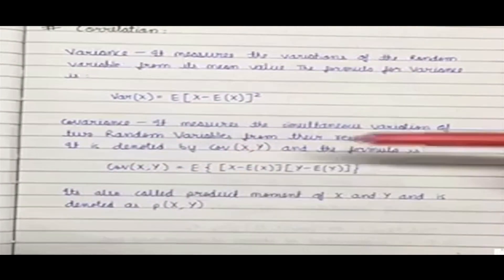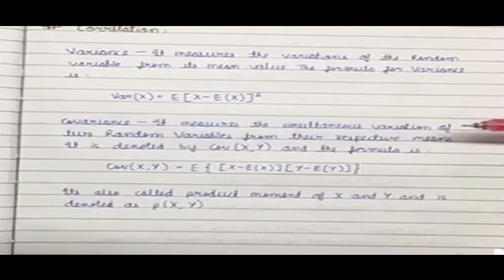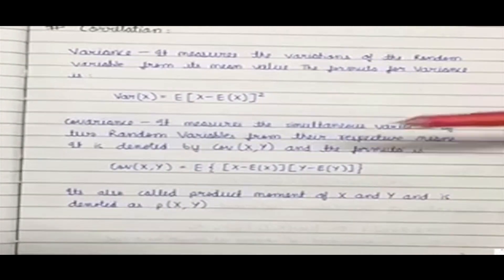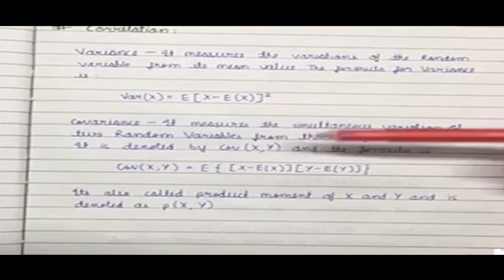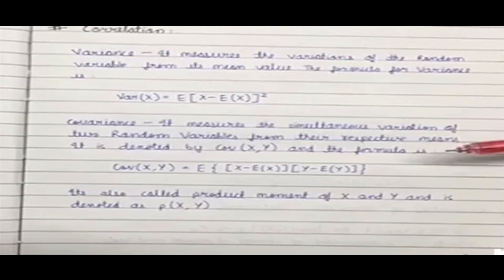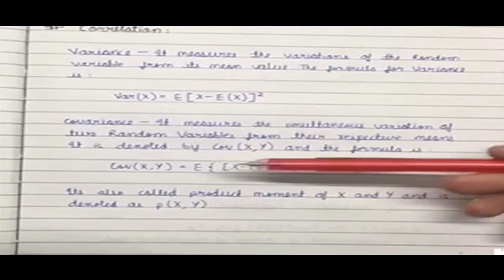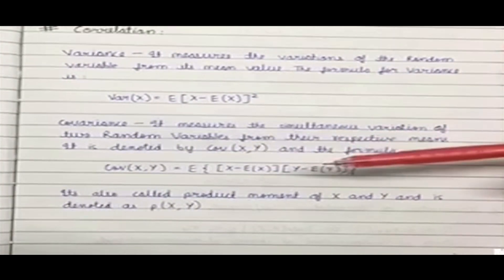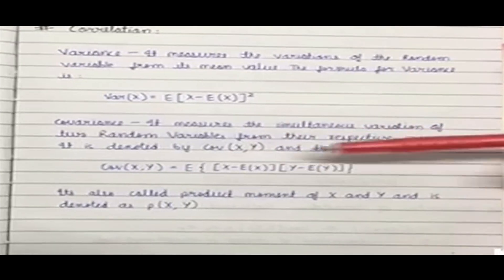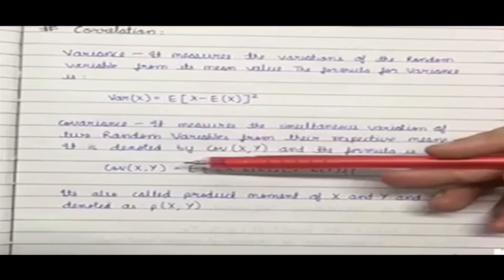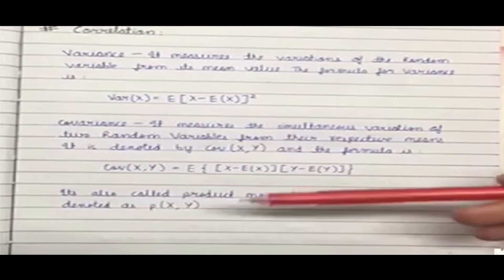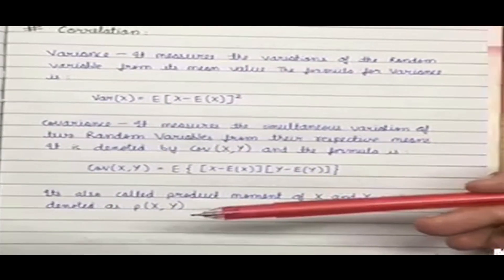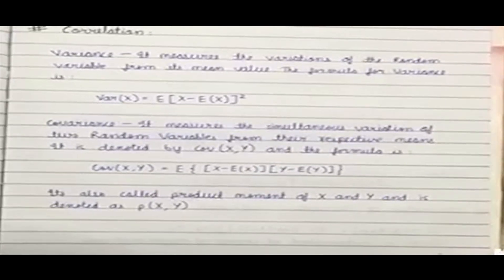Covariance means the measure of simultaneous variation of two random variables from their respective means. It is denoted by Cov(X, Y), and the formula is the mean of (x minus its mean) and (y minus its mean), denoted by E. It's also called the product moment of x and y and is also denoted as ρ(x, y).